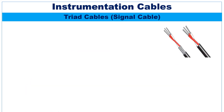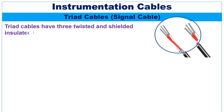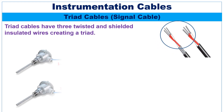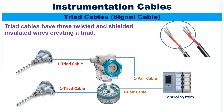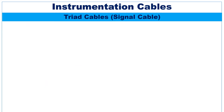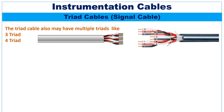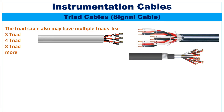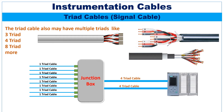The next signal cable is the triad cable. Triad cables have three twisted and insulated wires creating a triad. The triad cables are laid between RTDs and temperature transmitters. The triad cables may also have multiple triads, like 3, 4, or 8 triads, and multi-triad cables are used between the junction box and control system.